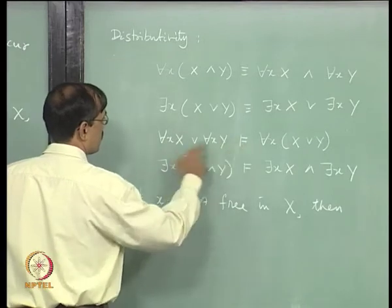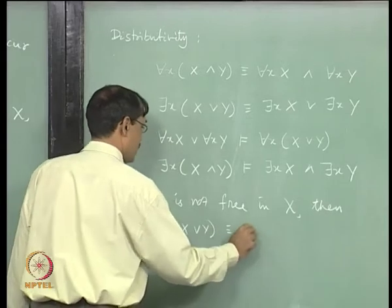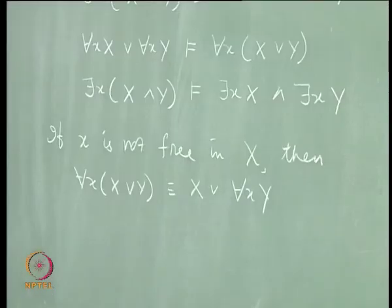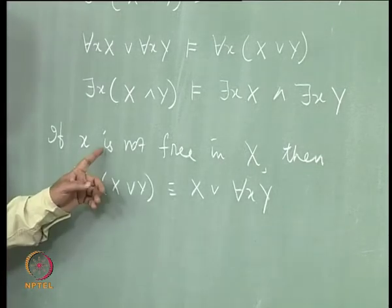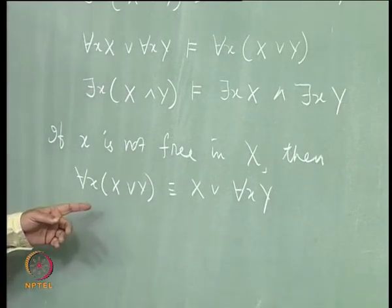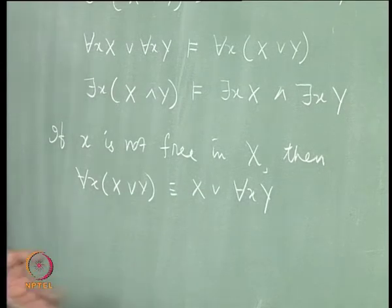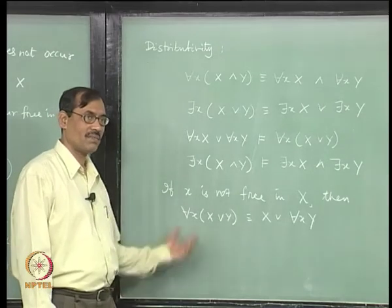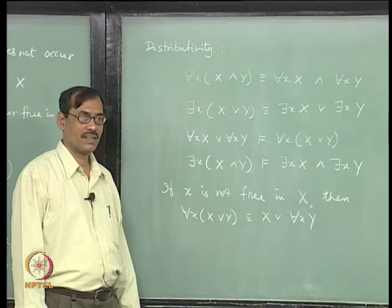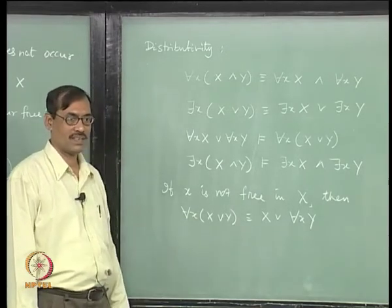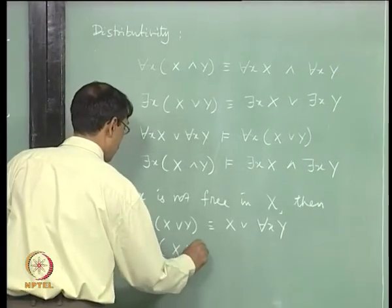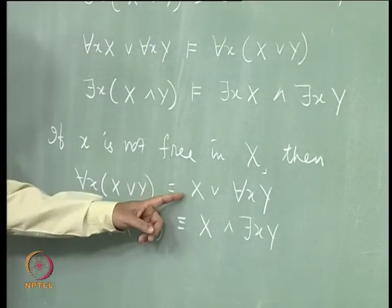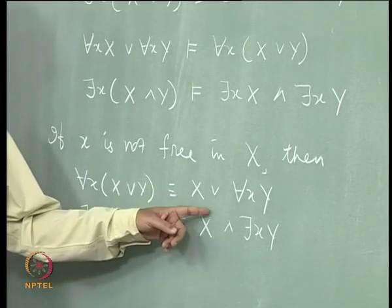Then we have something on conditionality. If x is a variable which does not occur free in capital X, then we can have some other distributive laws. For instance, x or y is equivalent to x or for each x, y. Once you say x is not free in capital X, it means as if x is not at all occurring in capital X — because you have renaming, so you can rename bound variables. Then it does not matter when you take it out. Similarly, there is x, x and y, should be equivalent to x and there is x, y.